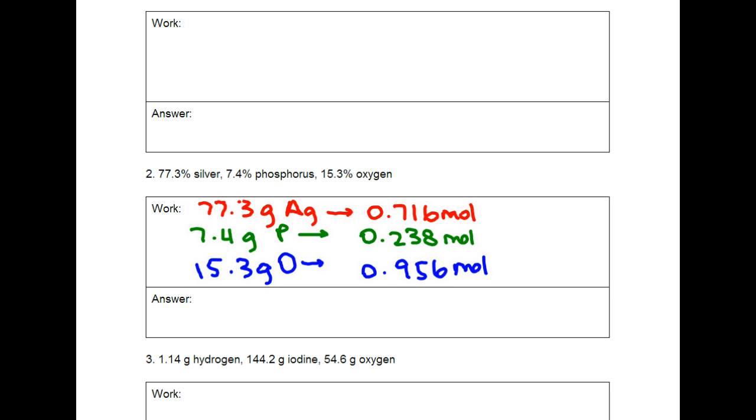In this problem, we see that the 0.238 is the smallest of the numbers. So if we divide everything by 0.238, we would find the ratio of all of these. And if the number is sort of close, we round to the nearest whole number. Because in your empirical formulas, you would not have a decimal point in the subscripts. So in this case, we have Ag with 3, phosphorus with 1, and oxygen with 4. It would be Ag₃PO₄.